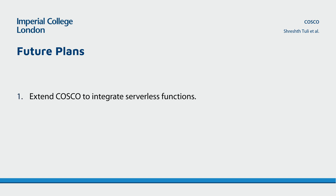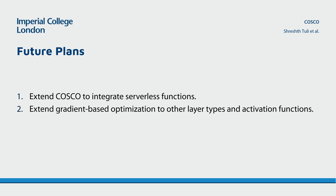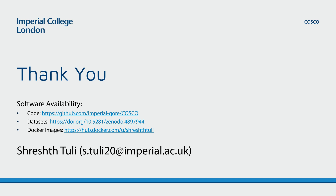For future work, we propose to extend the COSCO framework to allow workflow models for serverless computing, enabling fine-grained auto-scaling, increased productivity, and improved flexibility. For the gradient optimization approach, we currently restrict our deep surrogate functions to fully connected layers with differentiable activations, and plan to extend to recurrent, convolution, or attention layers with activations like ReLU, making the approach more generalizable. All code is available as an open-source GitHub repository, with datasets and Docker images available on Zenodo and Docker Hub. For any queries, please feel free to send me an email.